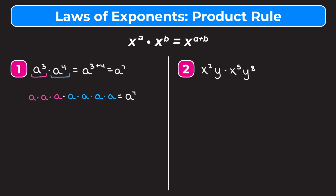Anytime you have the same base and you have two exponents being multiplied together, you're just going to add the powers together.